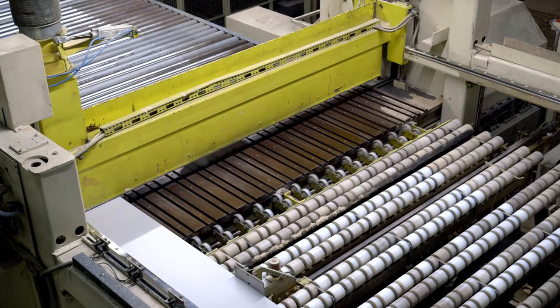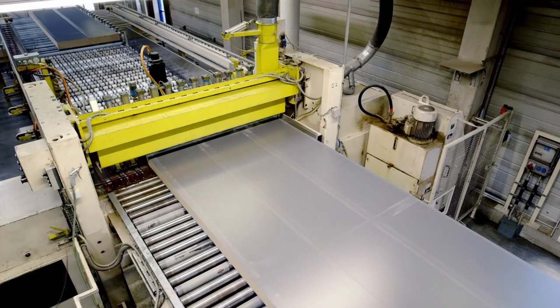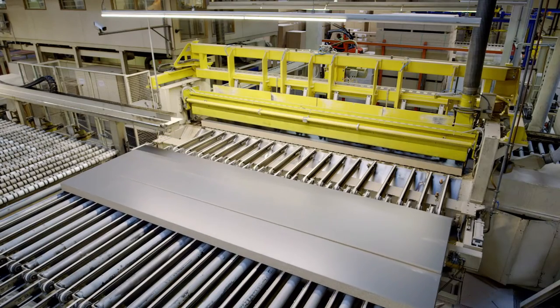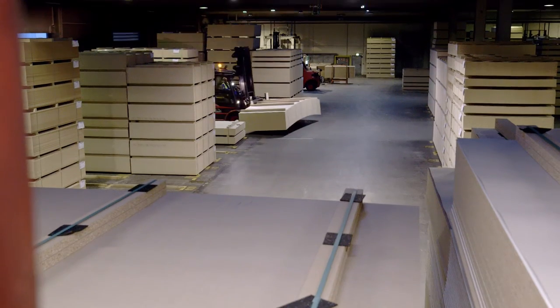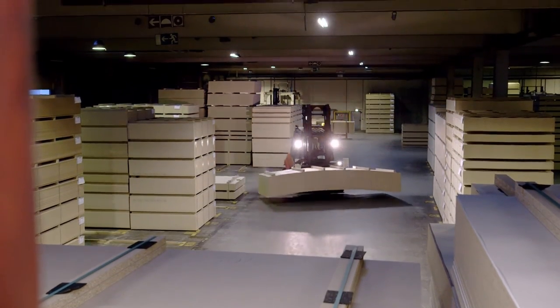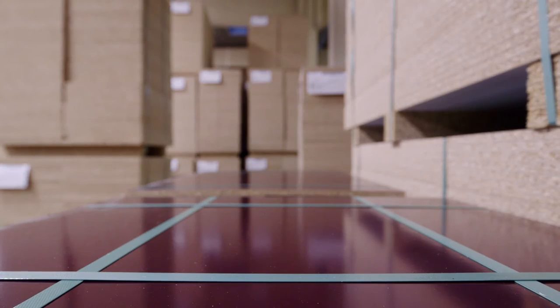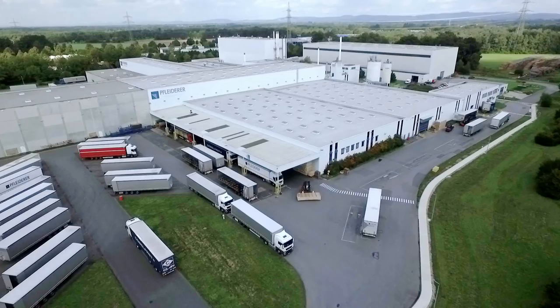A fully automatic sizing saw cuts the panels to size, using a computer-controlled optimization calculator, which also allows for customized formats. Lengths range from 300 to 5,600 millimetres. Widths from 200 to 2,200 millimetres.